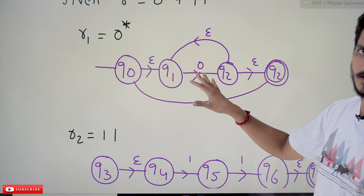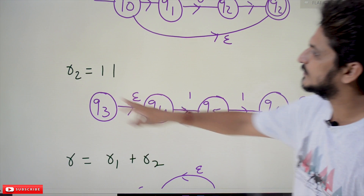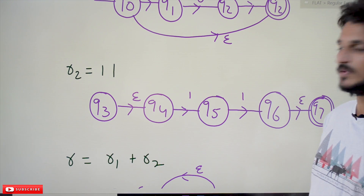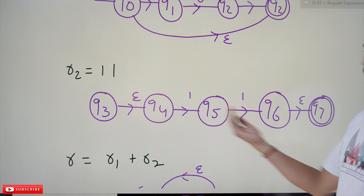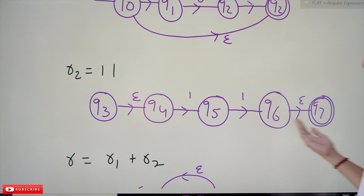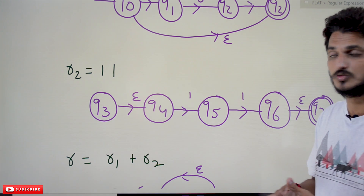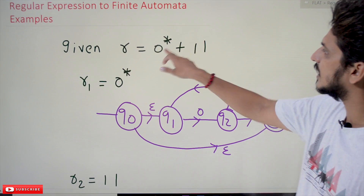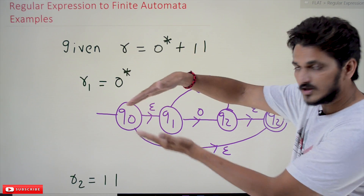The second expression is r2 equal to 11. We can write 11 as 1 followed by 1. This is the finite automata for the expression 11. Now if we want to combine these two — that is, r1 plus r2 — we use the union operator model.